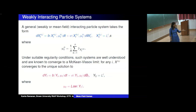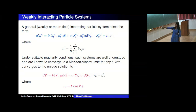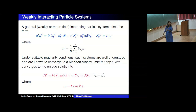The forward Kolmogorov equation for this process is nonlinear because of the presence of the law in the drift — hence 'nonlinear Markov process.' It's still Markovian: you can think of it as a time-inhomogeneous Markov process where the dependence on t is through the law. If someone gave you mu_t deterministically, it could be written as a function of t and Y_t.